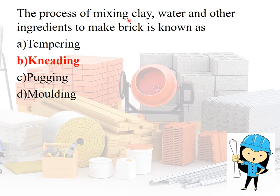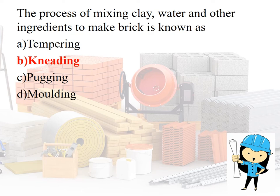The process of mixing clay, water, and other ingredients to make the brick is called kneading. Pugging means the process of grinding the clay with water and making it plastic — that is, bringing the clay material to the plastic stage. Molding means making the clay or brick earth material to a perfect shape using a hand mold or machine molding.